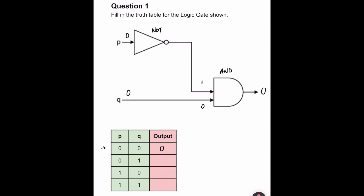The second scenario is P equals zero and Q equals one. The zero goes into the NOT gate and turns into a one, and Q's one comes into the AND gate as well. The AND gate now has two ones so it's going to produce a one.